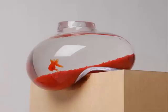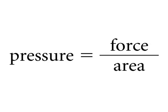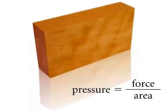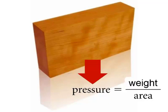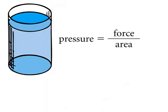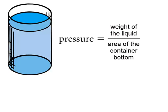A liquid in a container exerts forces on the walls and bottom of the container. Pressure is defined as the force per unit area on which the force acts. The pressure that a block exerts on a table is just the weight of the block divided by its area of contact. The pressure a liquid in a cylindrical container exerts against the bottom of the container is the weight of the liquid divided by the area of the container bottom.